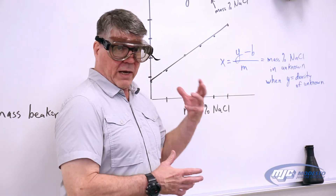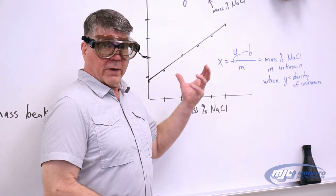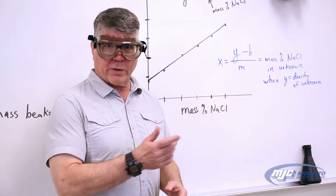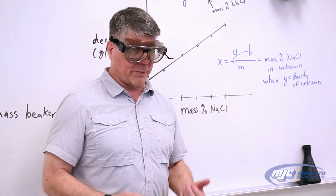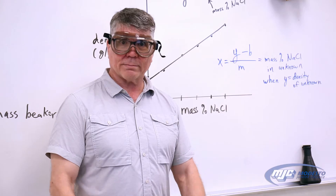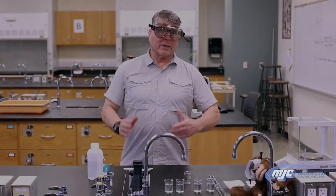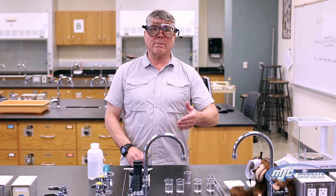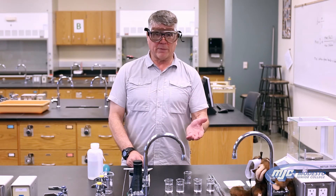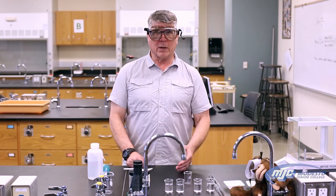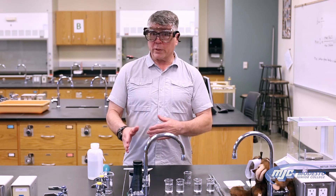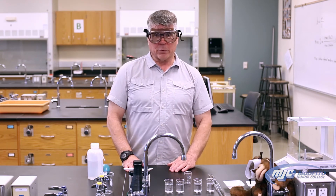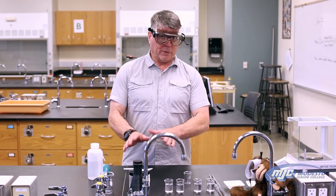All right guys, now that we see how we're going to find the mass percent sodium chloride in our solution, let's go over there and get started on the experiment. The first thing we need to do is make up our series of standards — we're going to make up five standards, solutions one, two, three, four, and five. We're also going to use deionized water as a standard, but we don't have to make that up.